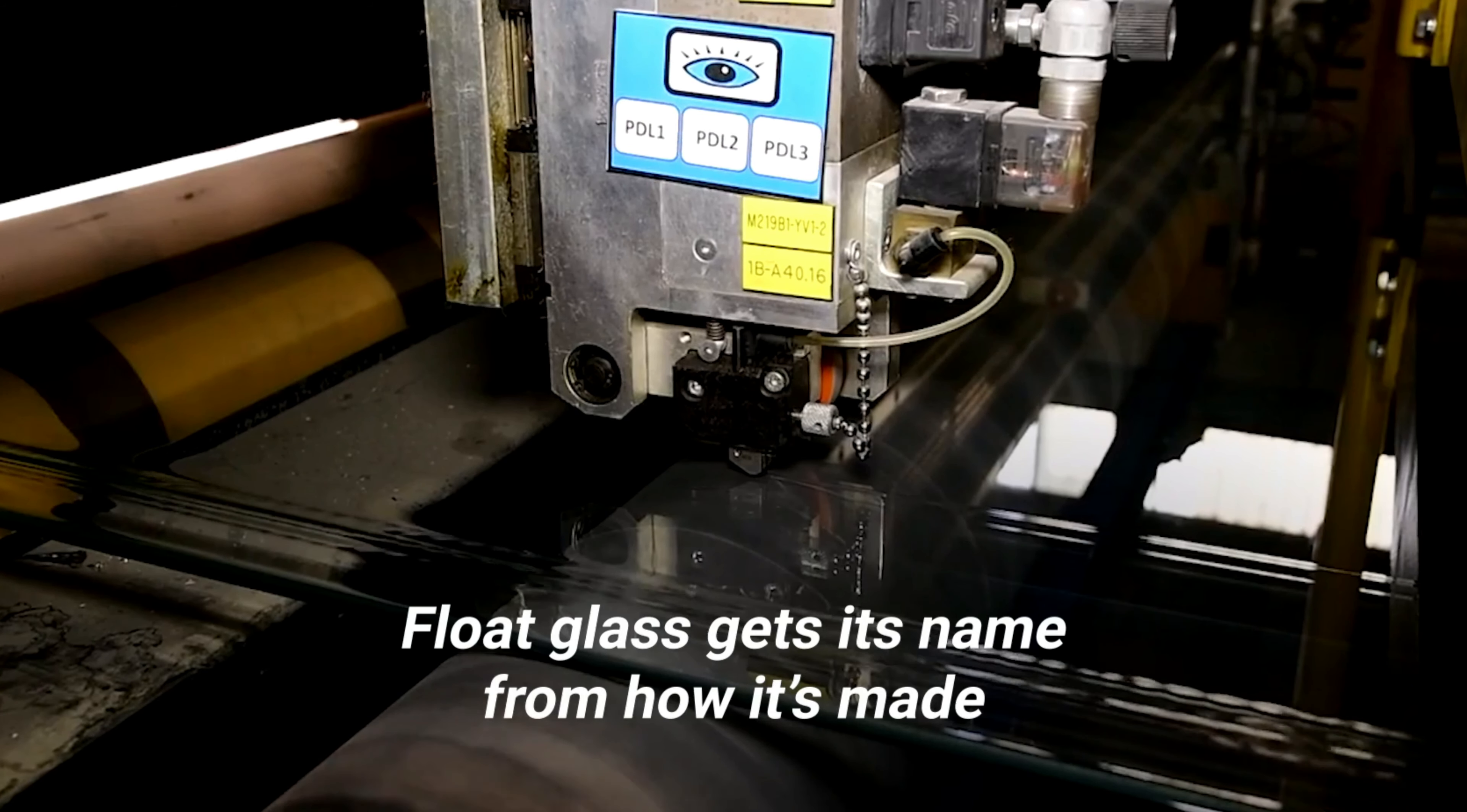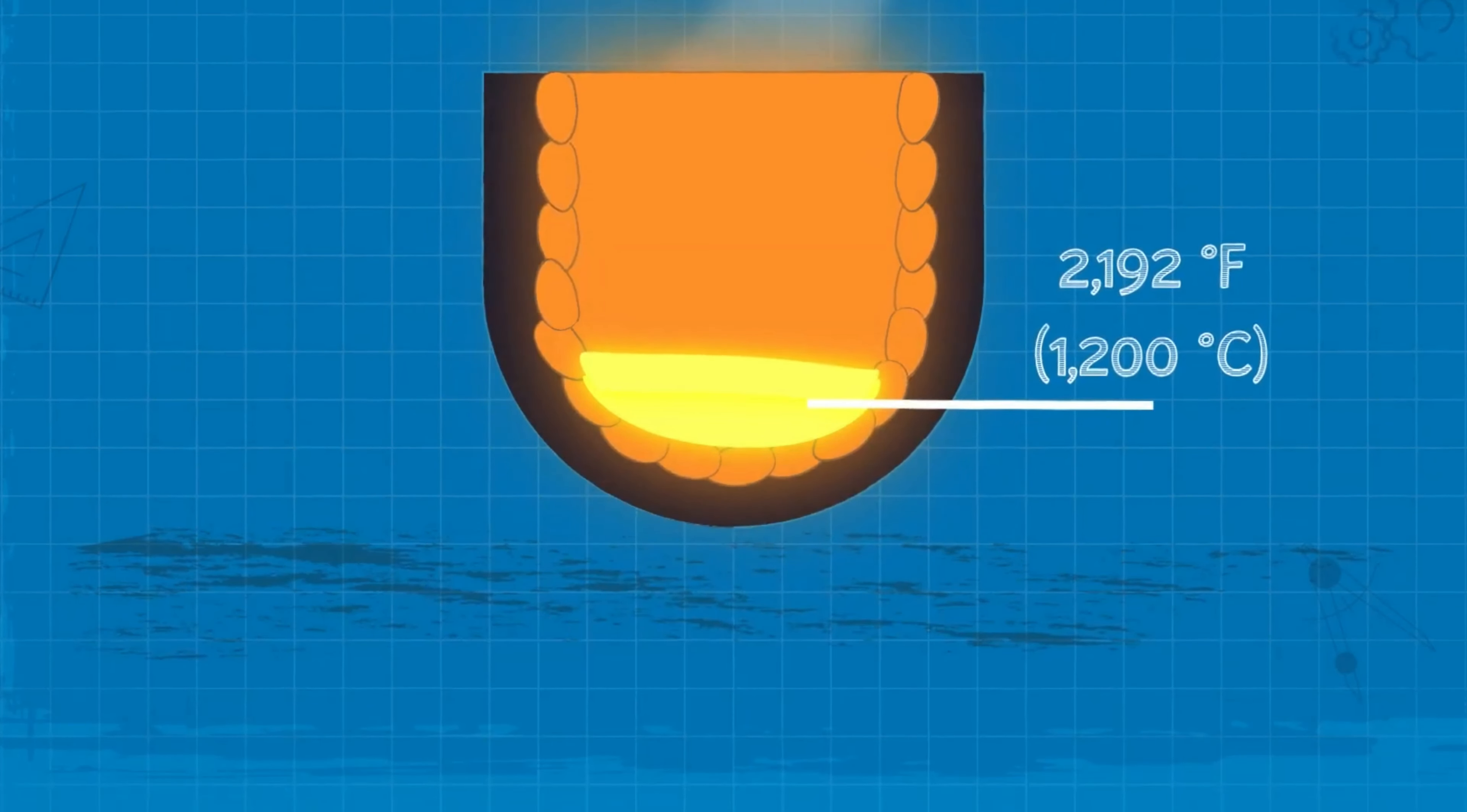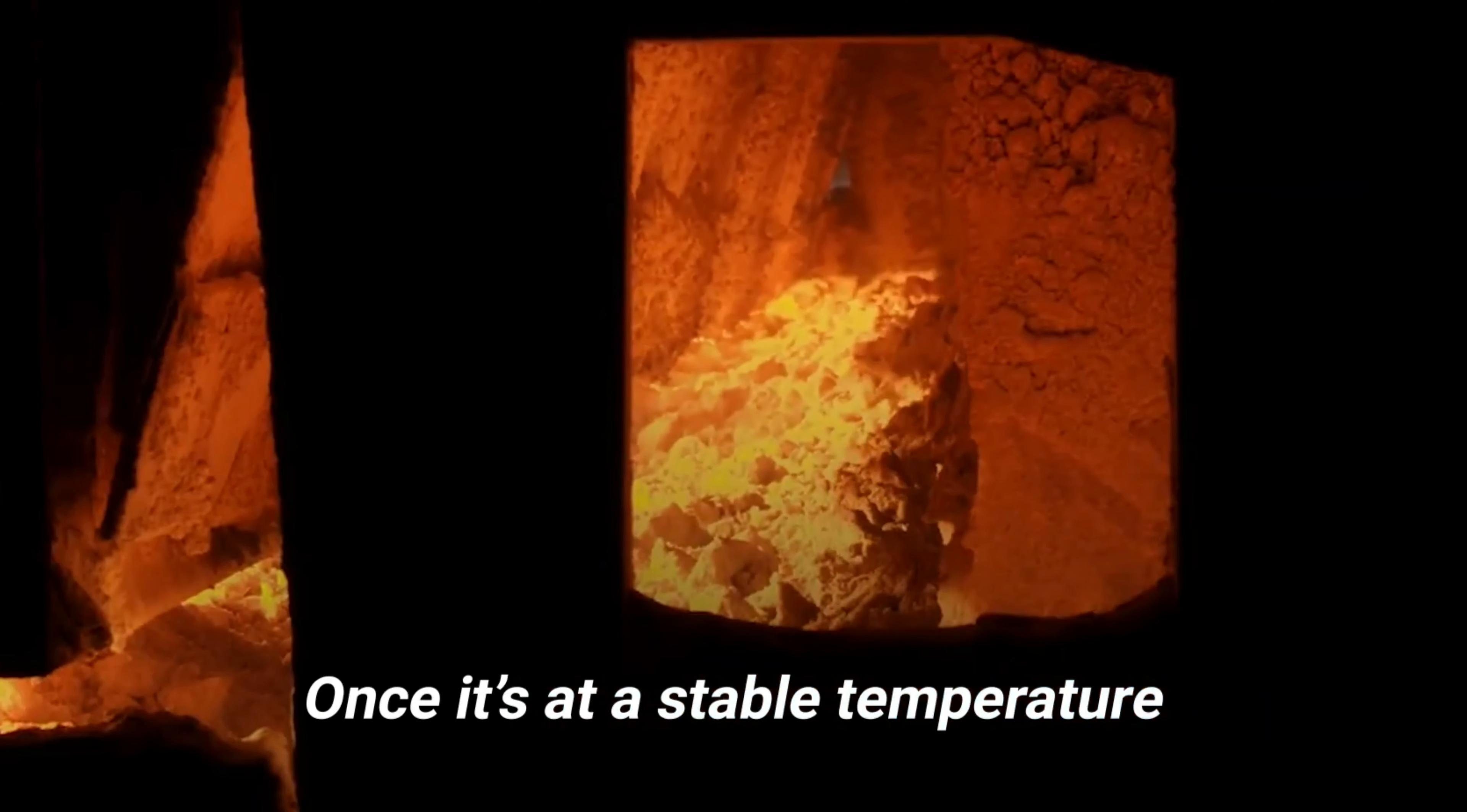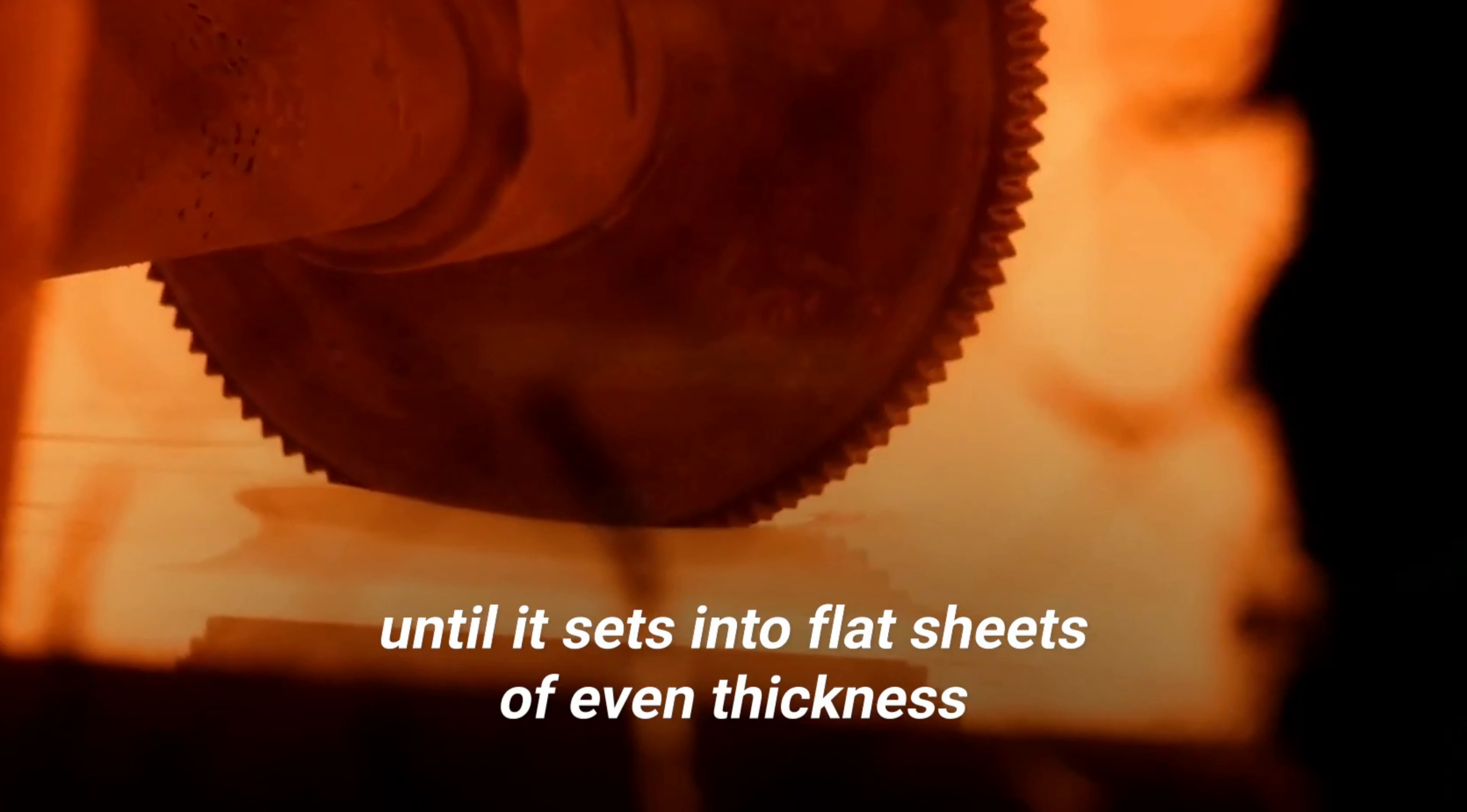Float Glass gets its name from how it's made. Once the glass reaches a molten state, its temperature is stabilized to roughly 2,192 degrees Fahrenheit to ensure density is even across the batch. Once it's at a stable temperature, the molten glass is then poured into a bath of molten tin, where it floats until it sets into flat sheets of even thickness.